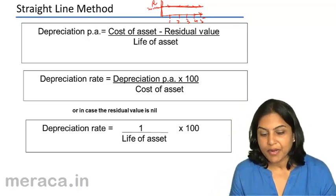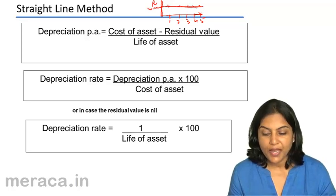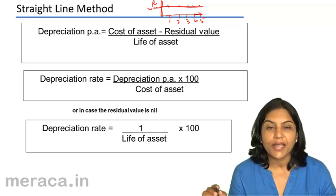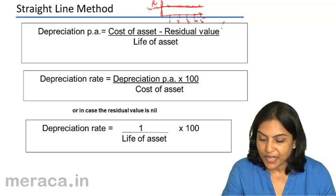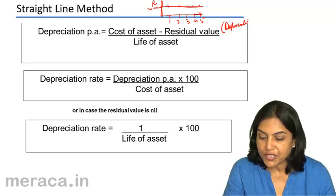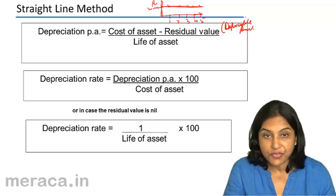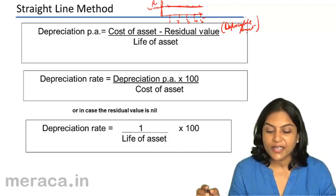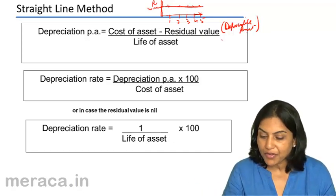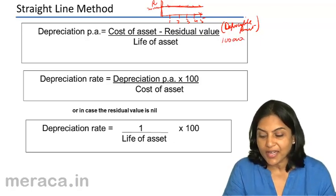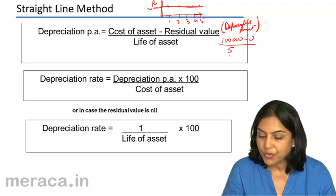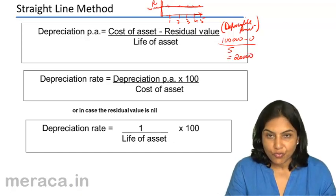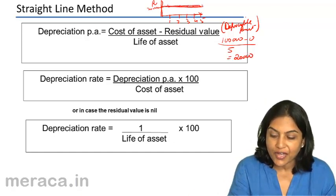Depreciation per annum under the straight line method is the depreciable amount divided by the life of the asset. Cost of asset minus residual value is the total depreciable amount. In our example, the cost of the asset was 1 lakh with no residual value, divided by 5, giving an amount of 20,000.